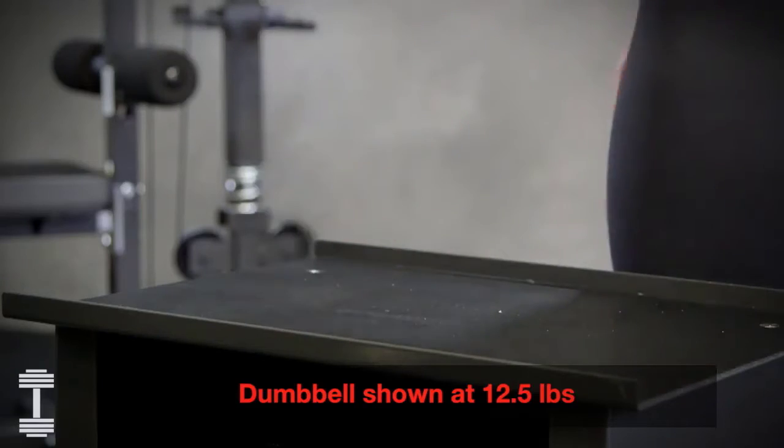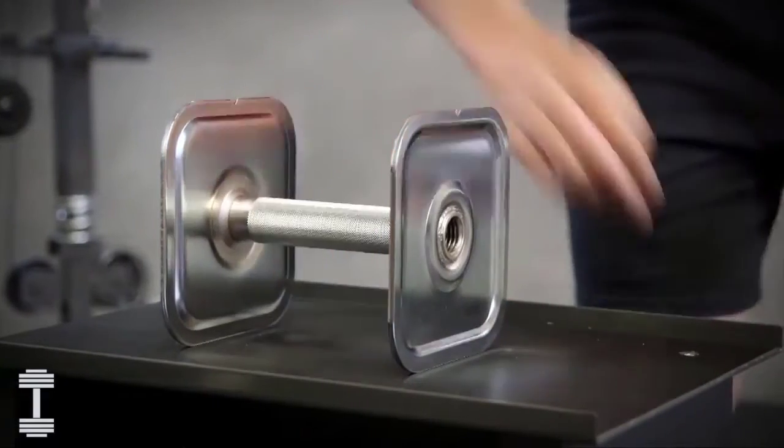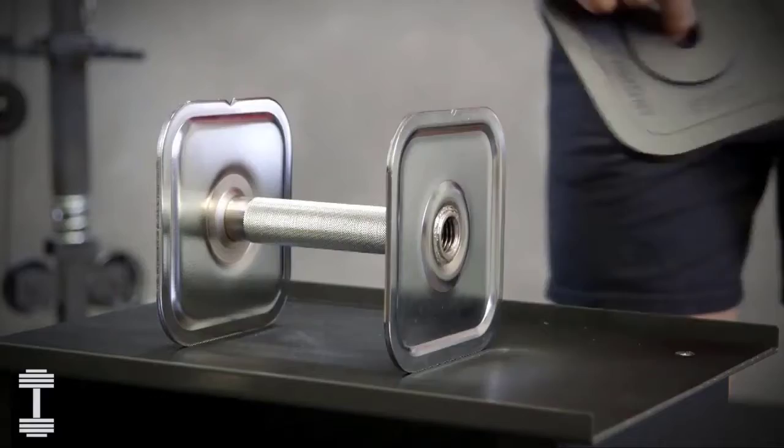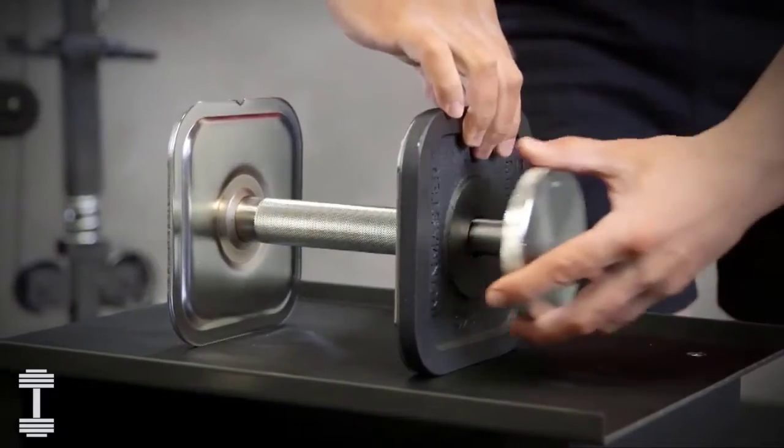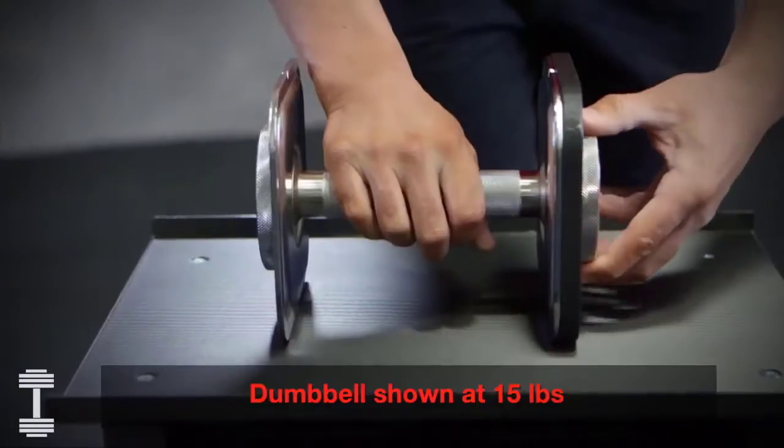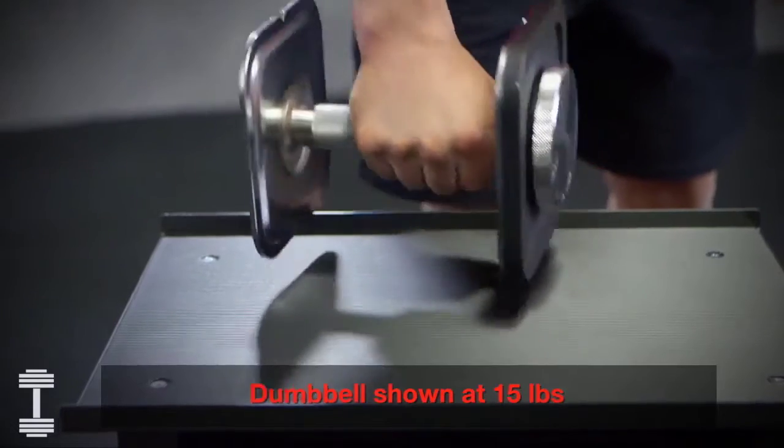Simply move your hand closer to the heavier end for good balance. To save time, you can even make a 5 pound change by loading just one 5 pound plate on one end and move your hand closer to the heavier end for good balance.